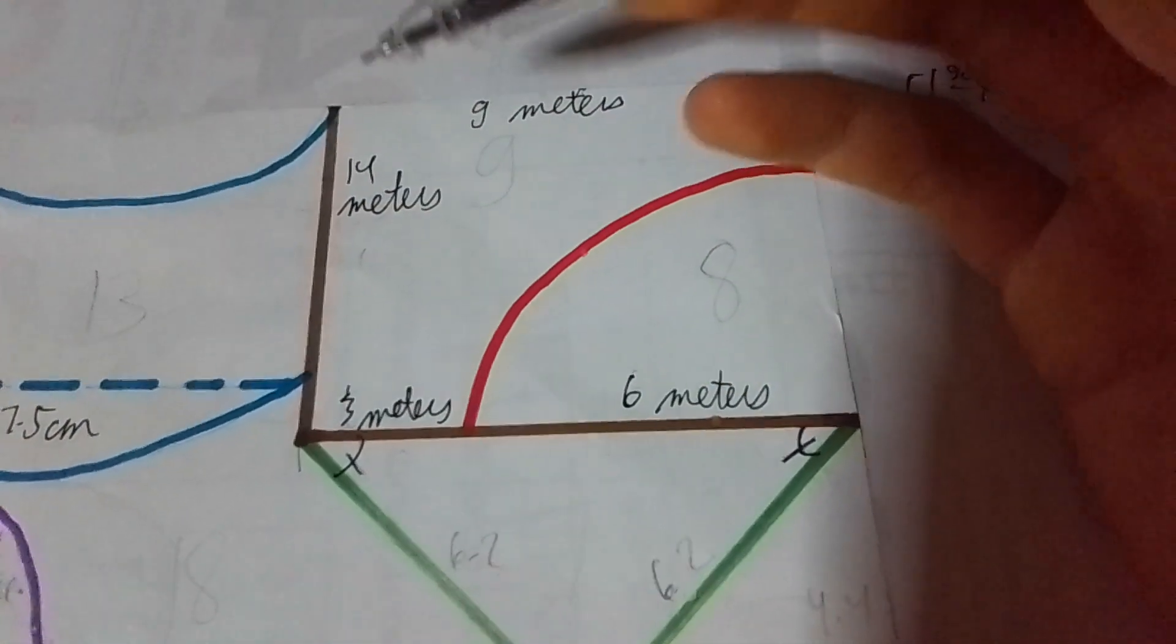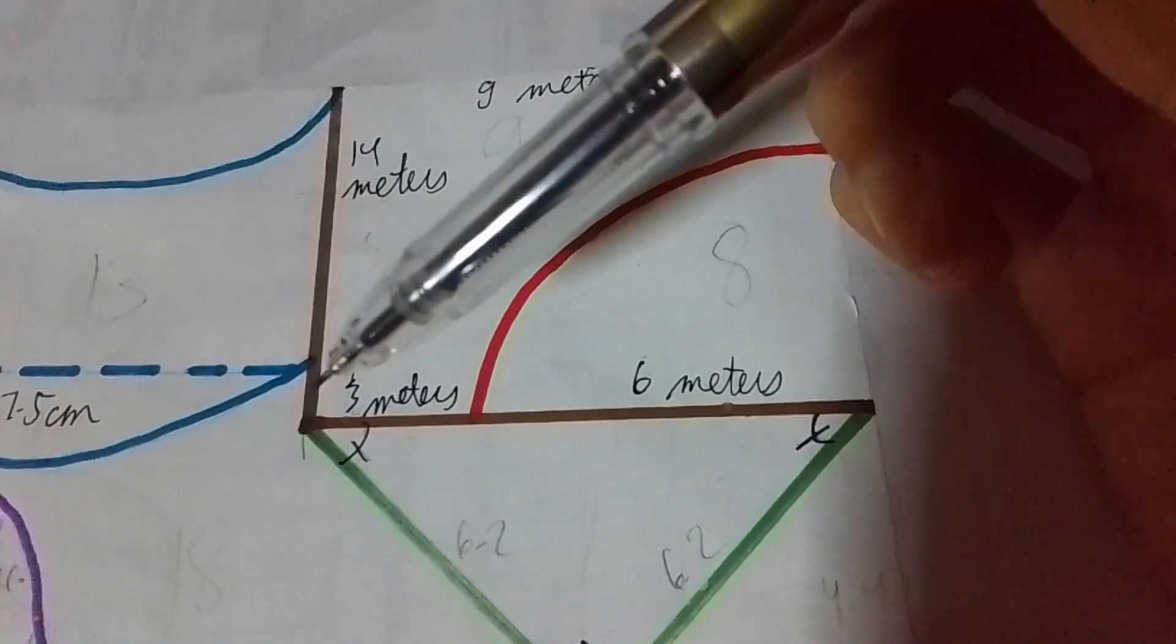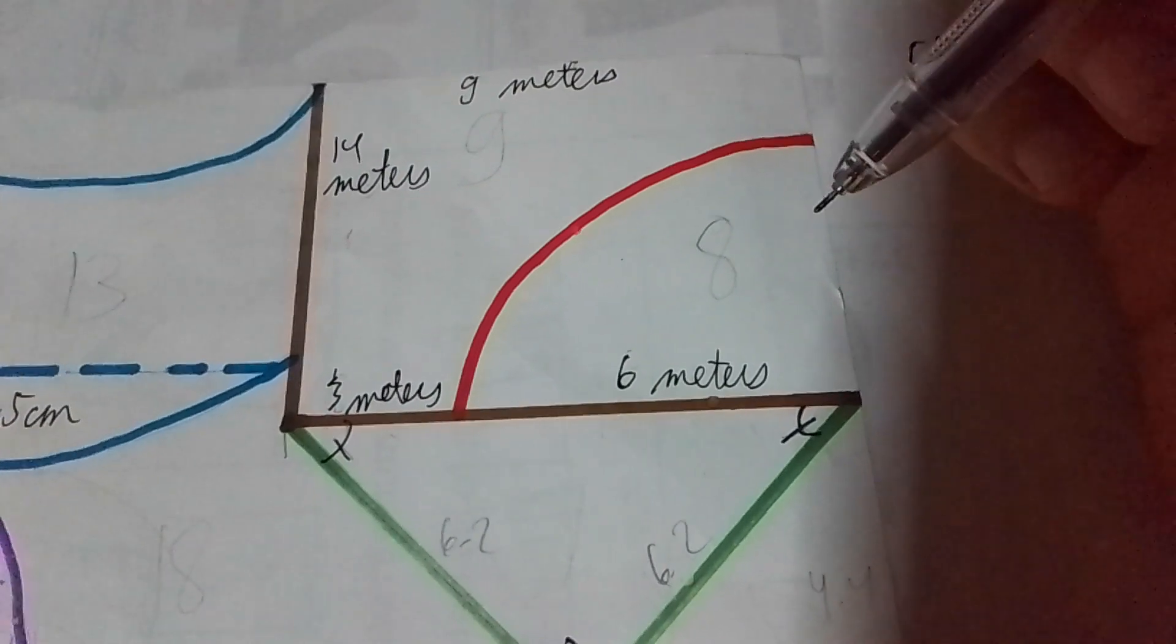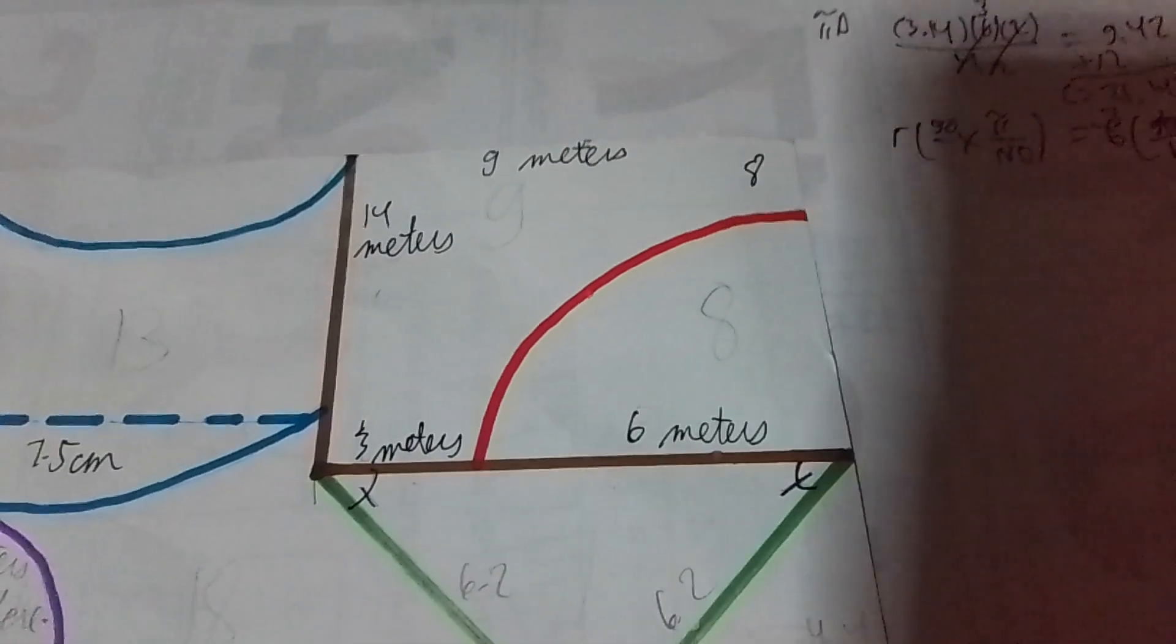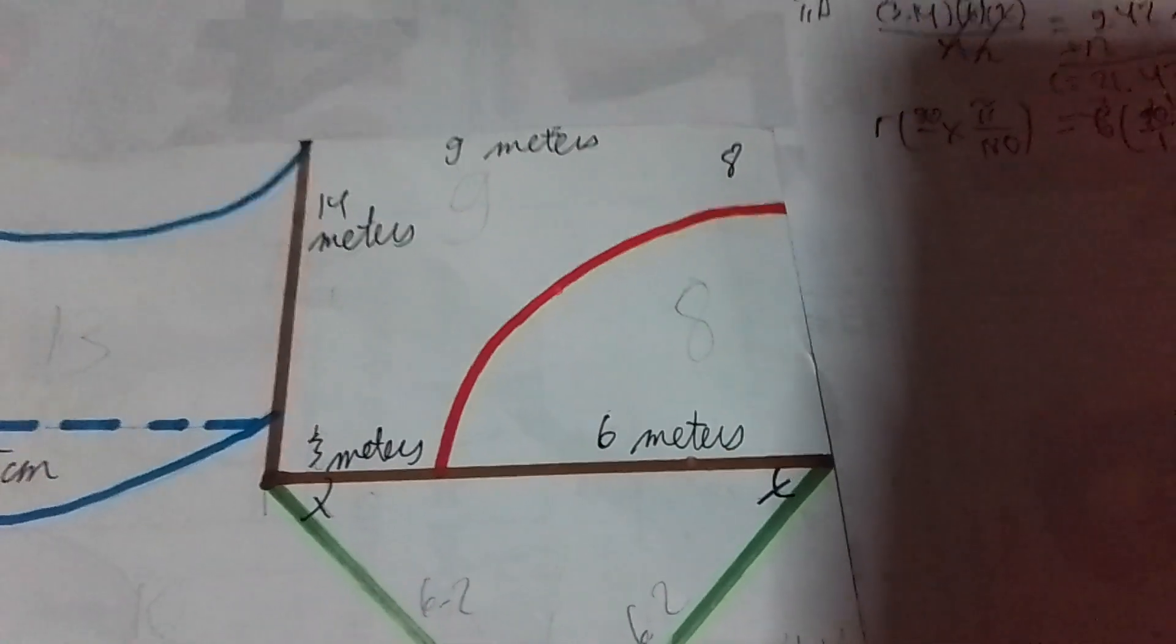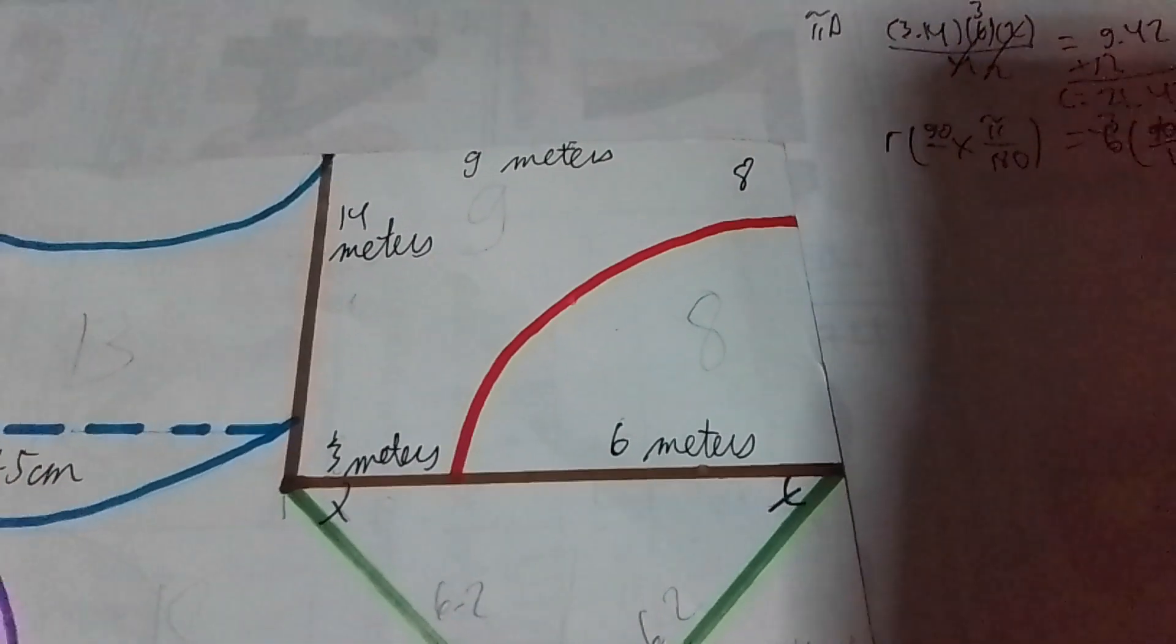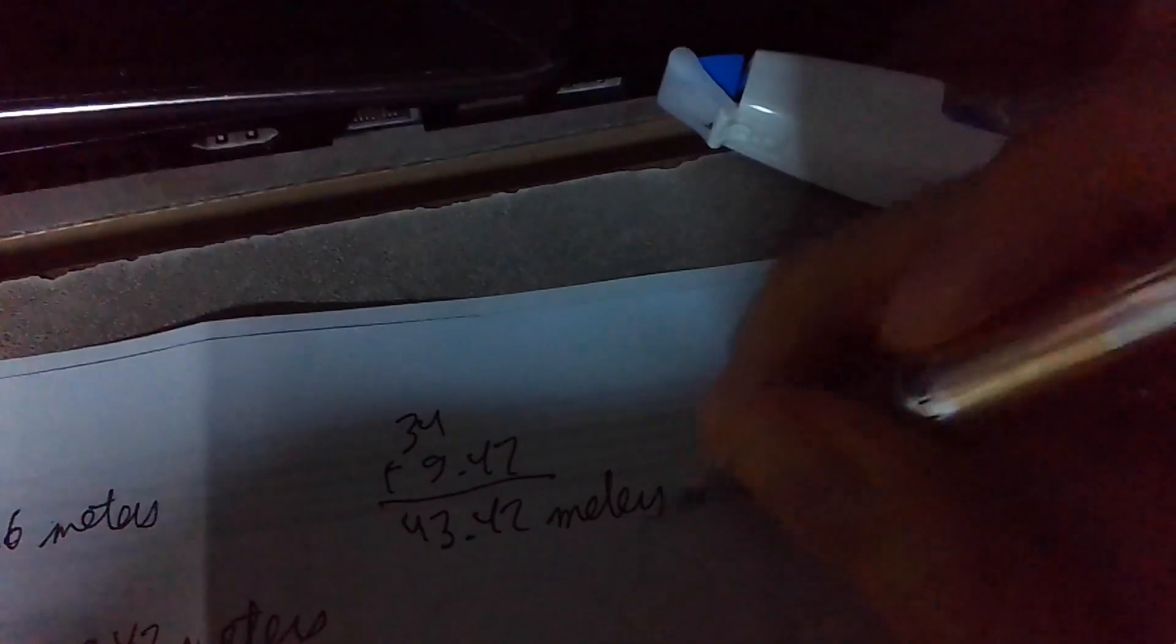On the other hand, if this is 14 and this is 6, this should be 8. Although it's not drawn to scale, pero okay lang yan. Now we add everything up. 3 plus 8 is 11, plus 9 is 20, plus 14 is 34.